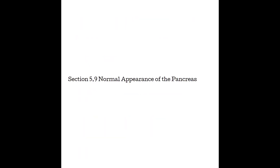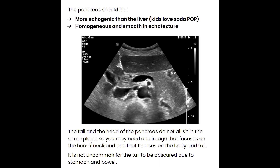We're going to wrap up with section 5.9, Normal Appearance of the Pancreas. When you see the pancreas by ultrasound, it should be more echogenic than the liver. Remember: kids love soda pop — pop is the pancreas, it should be the most echogenic organ. We also want it to be homogenous and smooth in echo texture. In this image we have the uncinate process, the pancreas head, neck, body, and tail. Comparing the pancreas tissue to the liver, the pancreas is more echogenic — it's very smooth in echo texture and homogenous, all the same level of gray.